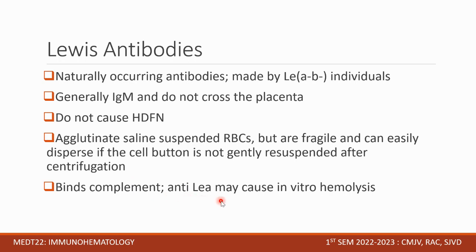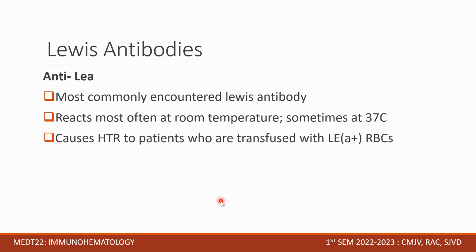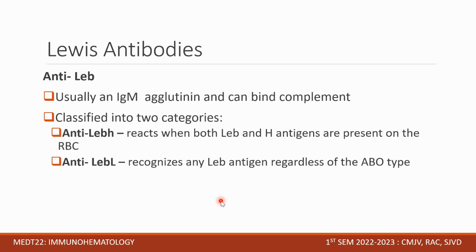Anti-LEA is the most commonly encountered Lewis antibody. It reacts most often at room temperature but sometimes at 37 degrees Celsius, and causes HDR in patients transfused with LEA-positive RBCs. Anti-LEB is usually an IgM agglutinin and can bind complement. It is classified into two categories: anti-LEBH, which reacts when both LEB and H antigens are present on the RBC, and anti-LEBL, which recognizes any LEB antigen regardless of ABO type.